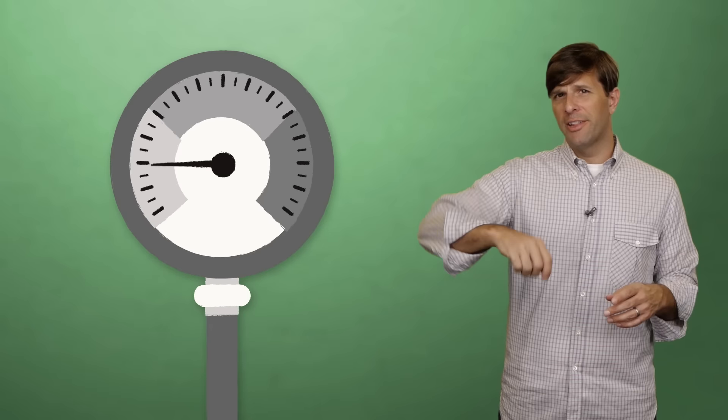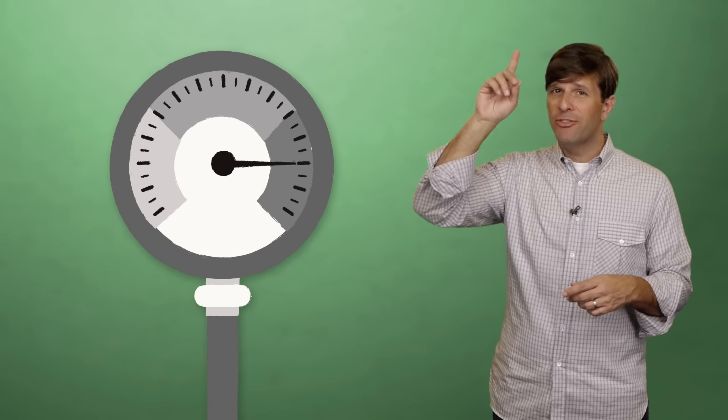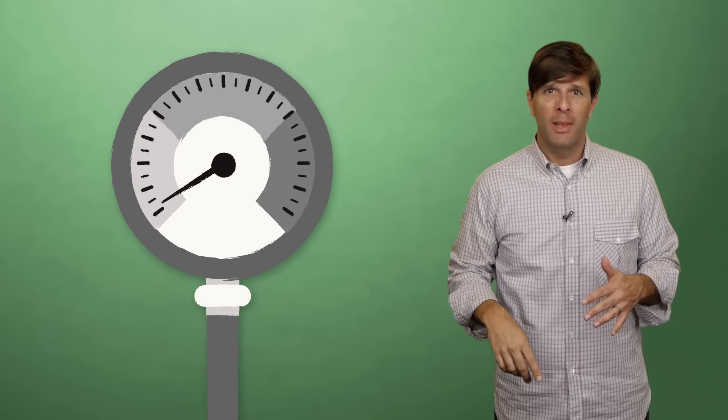Now when you faint from anxiety, which is what researchers think is going on when you faint from the sight of your own blood, your blood pressure suddenly spikes but then just as quickly it decreases. And that decrease in blood pressure drains blood away from your brain causing you to lose consciousness.